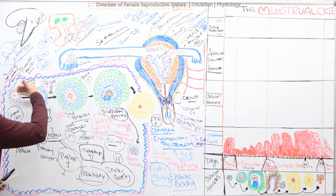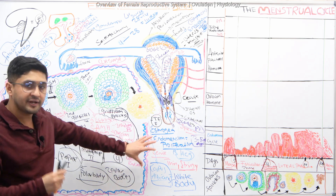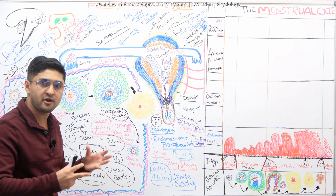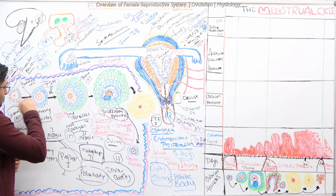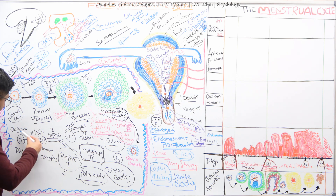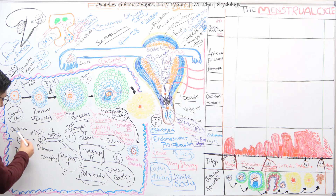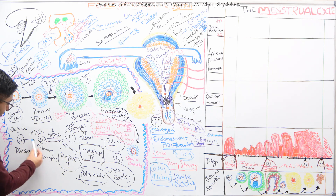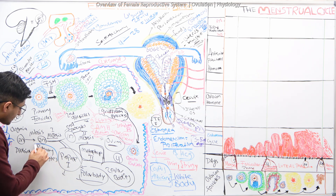The ovary has two parts: an inner medulla and a peripheral cortex, where these follicular cells are located. Oogenesis begins from primary germ cells arriving from the yolk sac during intrauterine life. They undergo mitosis and growth during intrauterine life and convert into primary oocytes.